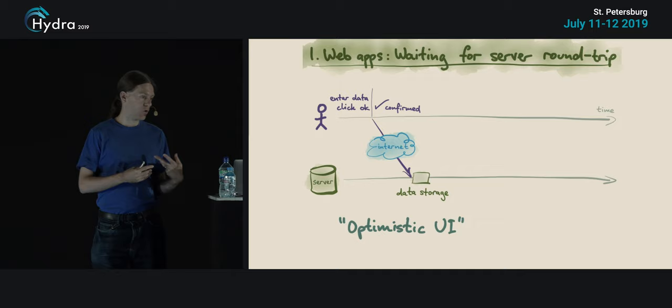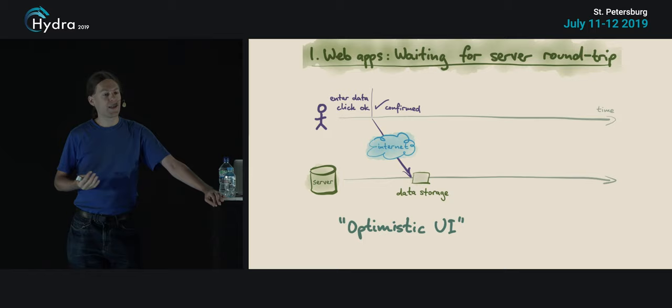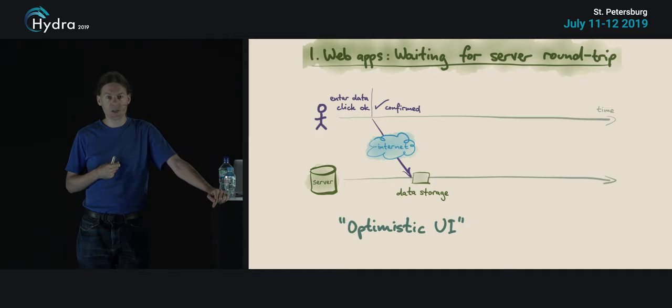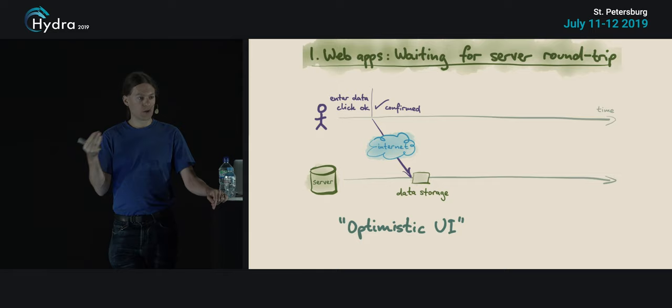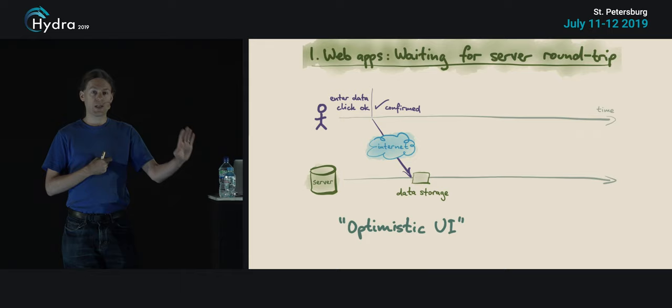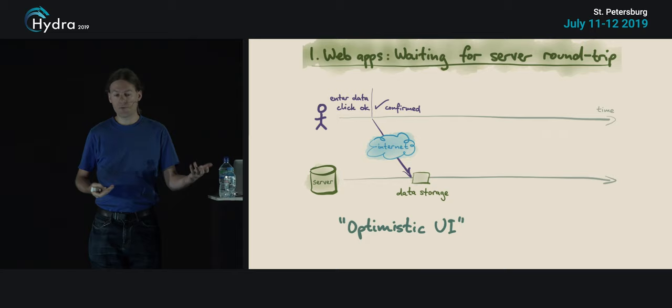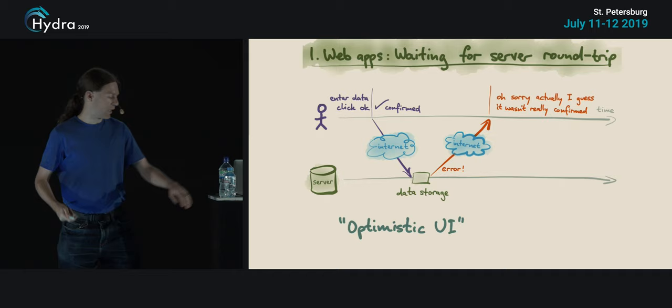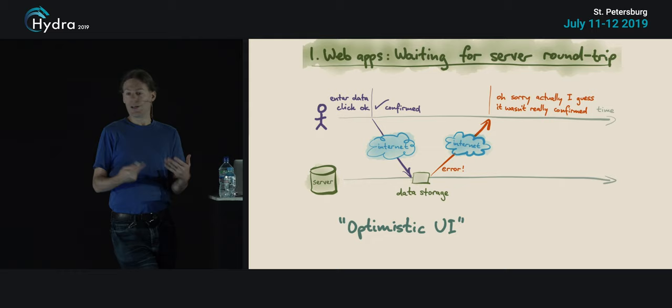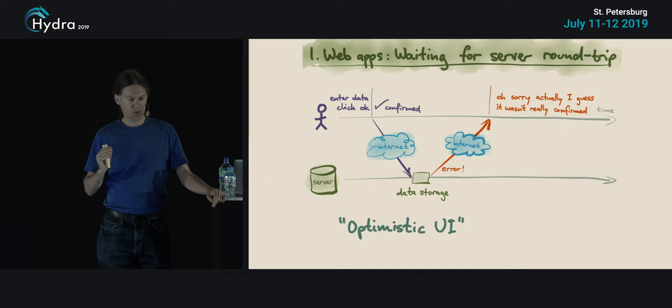We can do tricks to hide this latency. Popular among JavaScript web application developers is a pattern called optimistic UI — where when the user enters data and presses OK, we immediately show the user interface as if the data had been stored to the server, even though the communication is happening asynchronously in the background. This makes the software feel faster, but if anything goes wrong — maybe the server returns an error or your internet connection is unstable — you have to update the UI saying the data wasn't actually stored after all, which makes the mental model rather confusing.